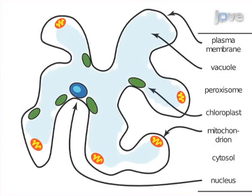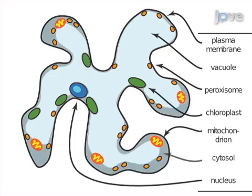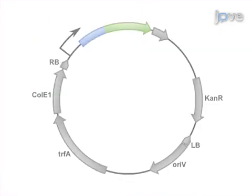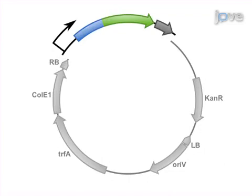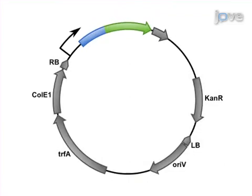Next, design the expression construct. The construct must contain a promoter, a detectable gene, and a terminator within a single plasmid.